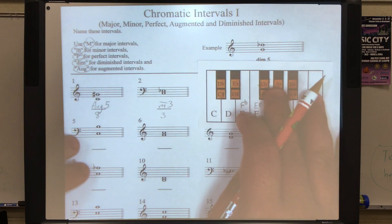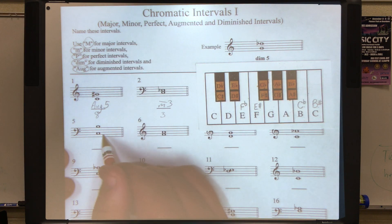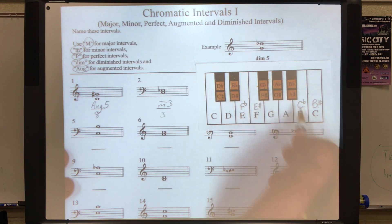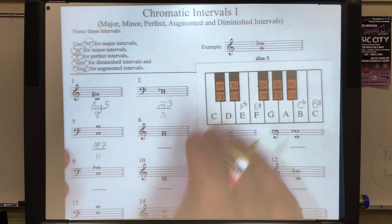Let's look at the next line. Number five. We've got a C to a B natural. C is zero, one, two, three, four, five, six, seven, eight, nine, ten, eleven. Eleven half steps. If we look at our chart, we can see that that is a major seven.